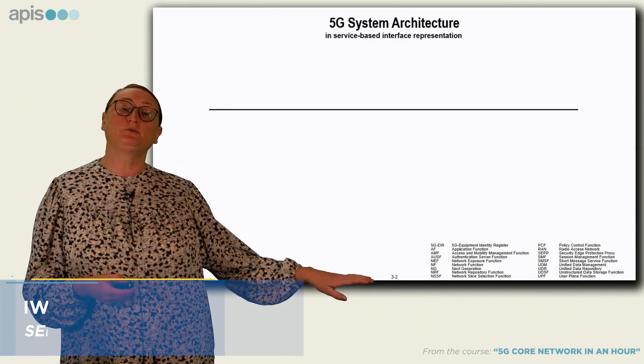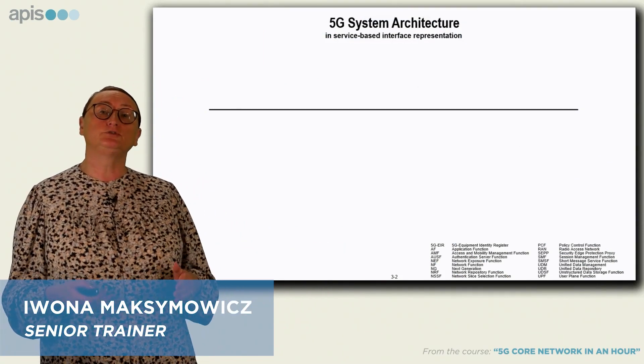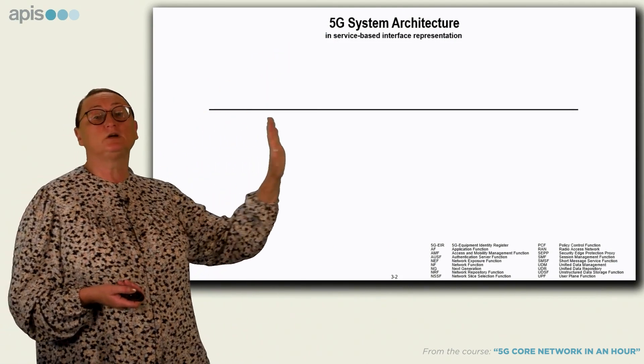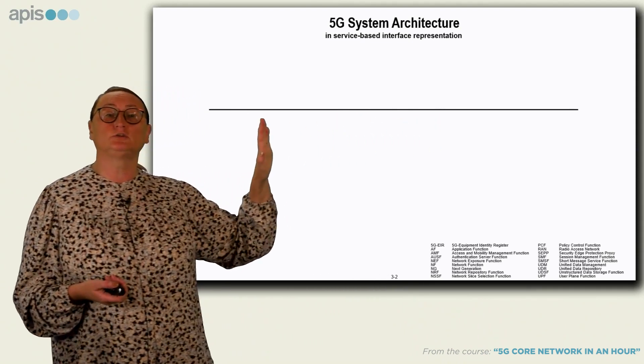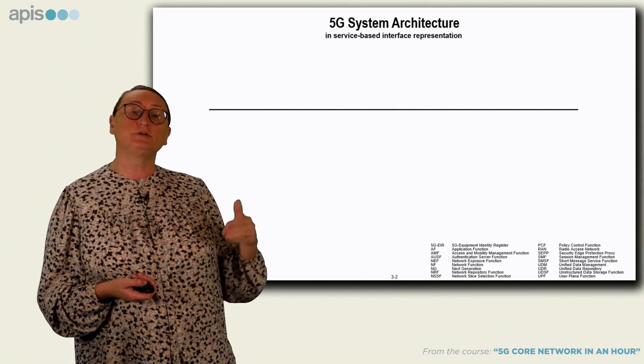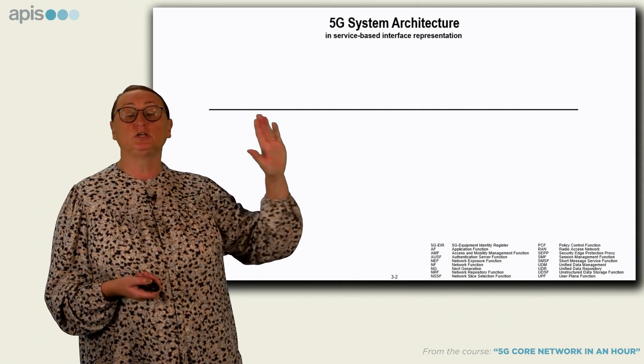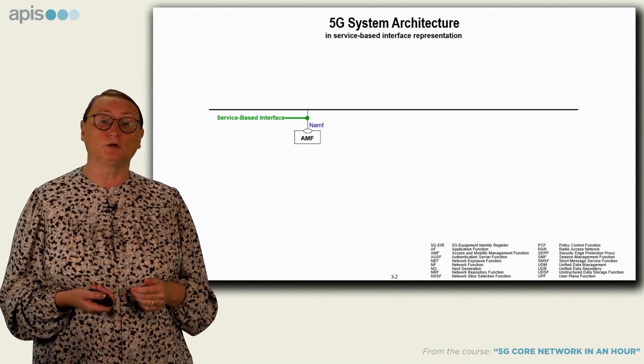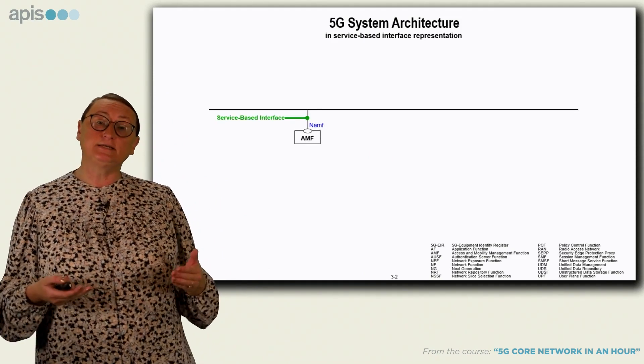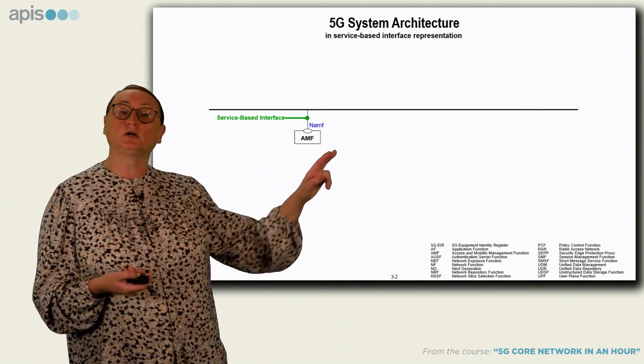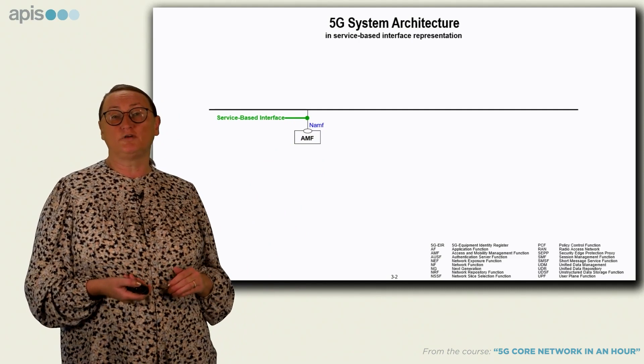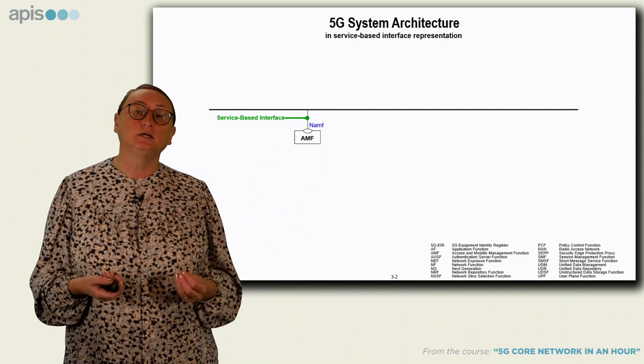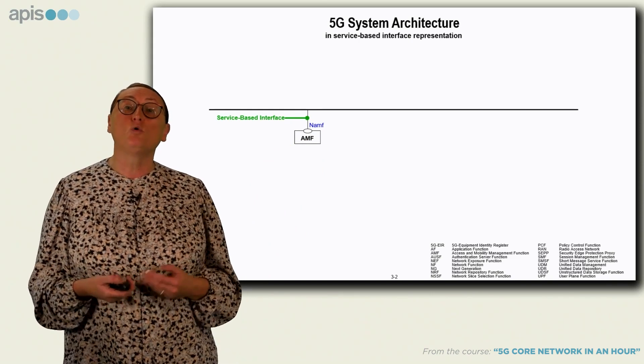On this slide, we're in chapter 3, now slide number 2. I would like to show you the general definitions for the architecture that are based on this horizontal line over here. This is the service-based architecture representation. This is a communication line that interconnects the elements in the 5G Core Network. And these elements in the 5G Core Network, these are different network functions. Each network function is defined in the standards and it has defined capabilities, what it is that it does.